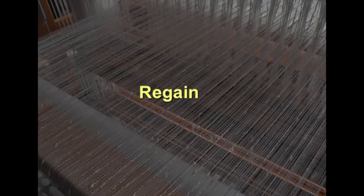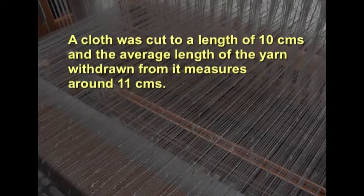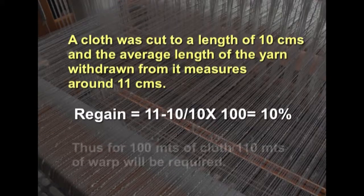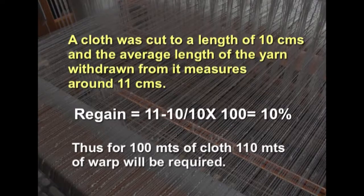Regain is estimated from the warp length on a sample cloth. The general procedure is to cut a cloth to a particular dimension and withdraw the threads carefully without stretching. The length of the yarn is then measured and the regain is calculated. For example, a cloth cut to 10 centimeters with average yarn withdrawn measuring 11 centimeters gives regain = (11 minus 10) divided by 10, multiplied by 100 = 10 percent. That means 100 meters of cloth requires around 110 meters of warp in the final material.